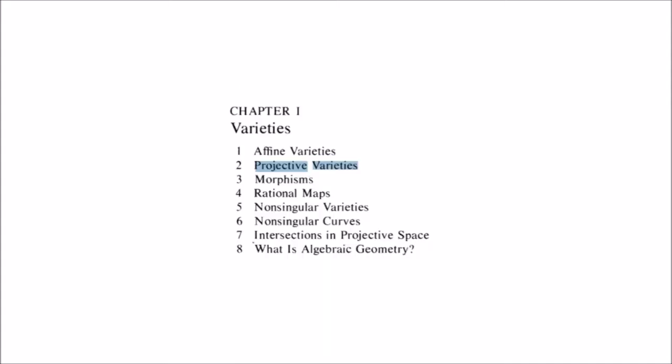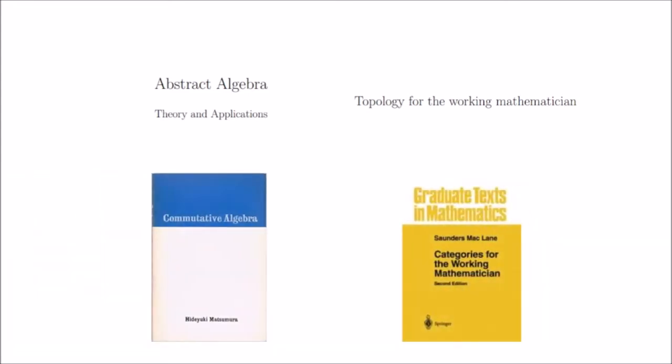I'm going to assume that if you're watching this, you've seen the previous video in this series about the section on affine varieties, so I'll keep this brief. Topology and abstract algebra are required knowledge, and the same textbooks recommended in the last lecture are recommended with links in the description. Commutative algebra and category theory will be helpful, specifically in this lecture with tools from commutative algebra such as localization of a commutative ring by an element and general results using graded rings.